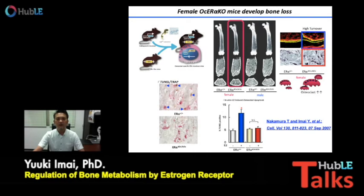Therefore, we generated osteoclast-specific ER alpha knockout mice, and female conditional knockout mice exhibited bone loss with high turnover, like postmenopausal osteoporosis. In this study, we revealed that estrogen can control apoptosis of osteoclasts.